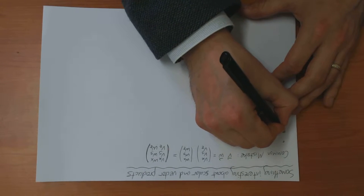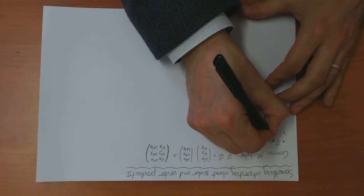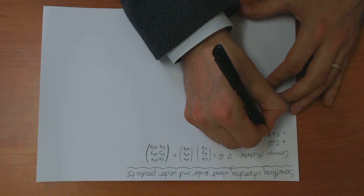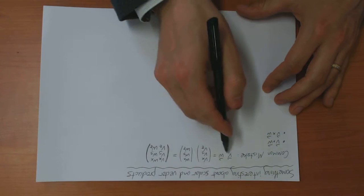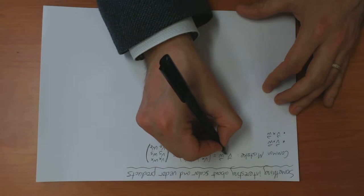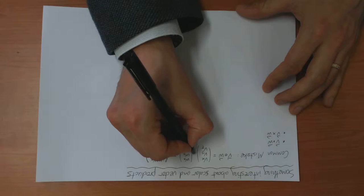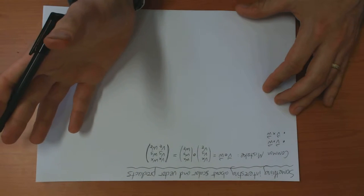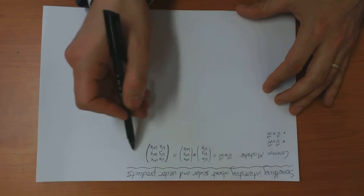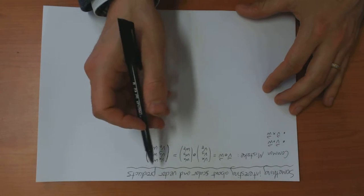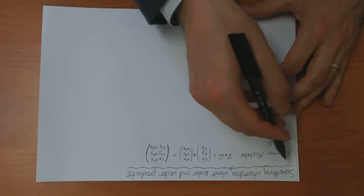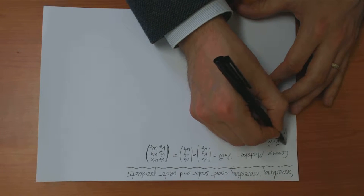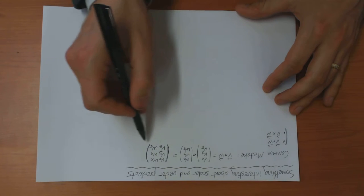So we've seen two ways of multiplying vectors together, which are the scalar product and the vector product. So this is some new way of multiplying vectors together. Let's call it the circle product. The question I want to answer is, why do we not do this?